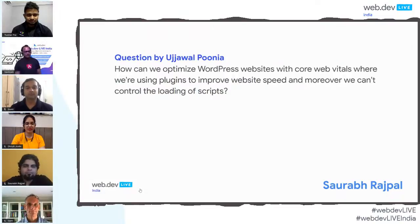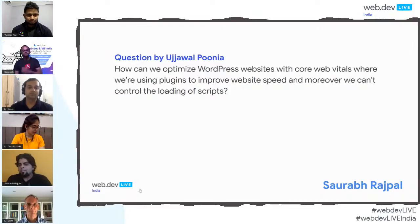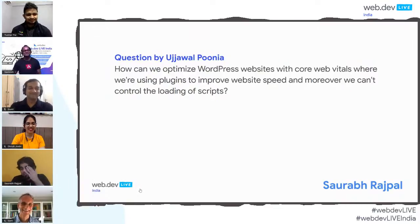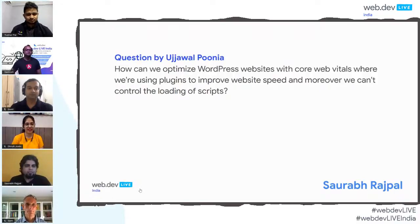The next question is from Ujwal Punia: how can we optimize WordPress websites with core web vitals where we're using plugins to improve website speed, and moreover we can't control the loading of scripts? When you work on something like WordPress where you're dependent on a lot of different plugins, it's more like having a website with a lot of third-party scripts, which Sunit covered very well in his talk.